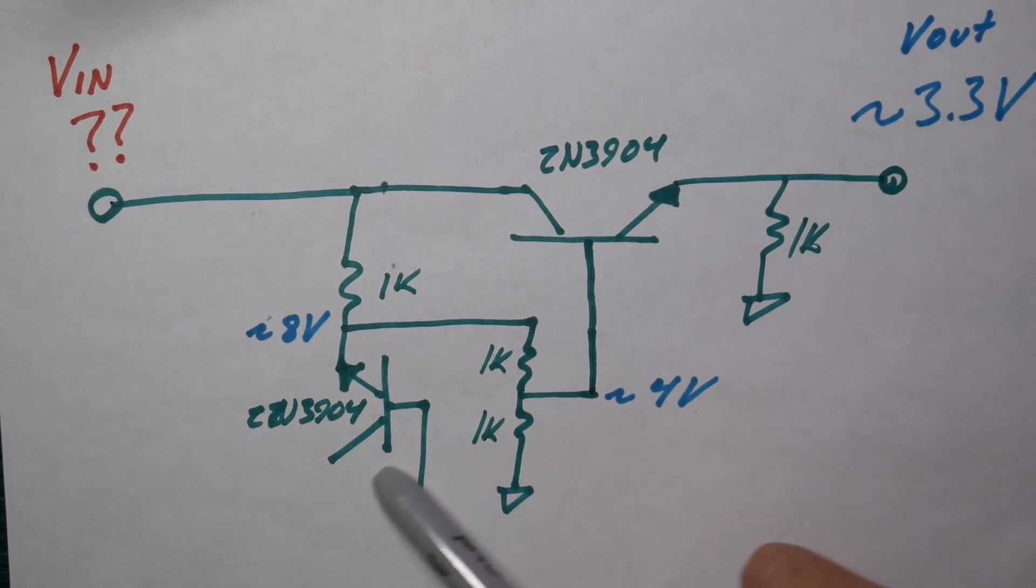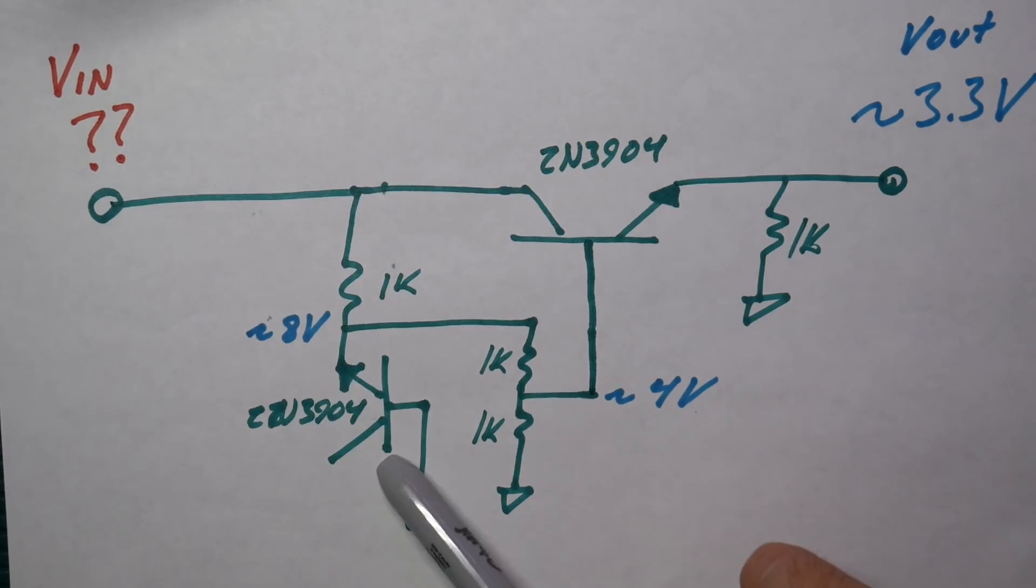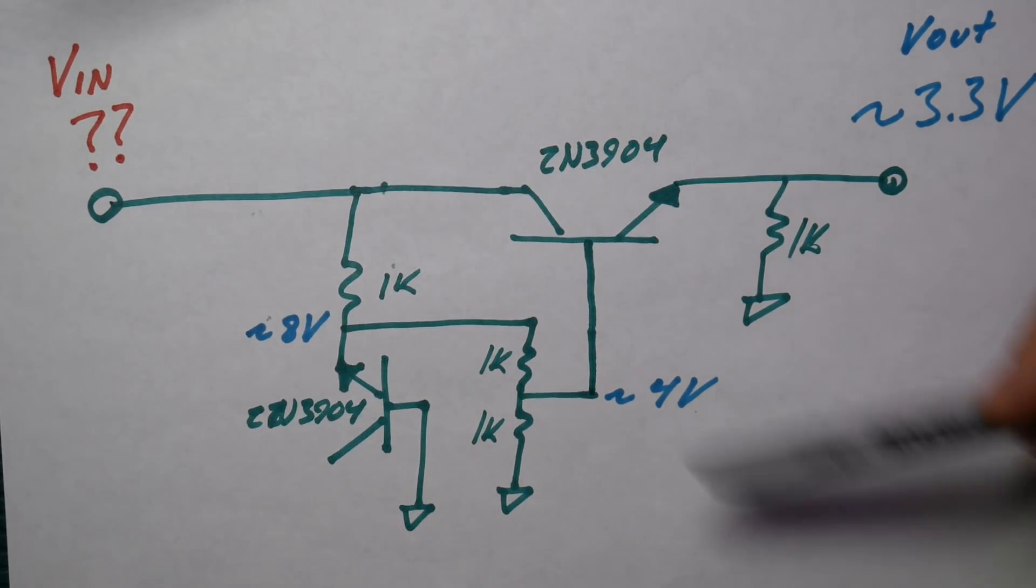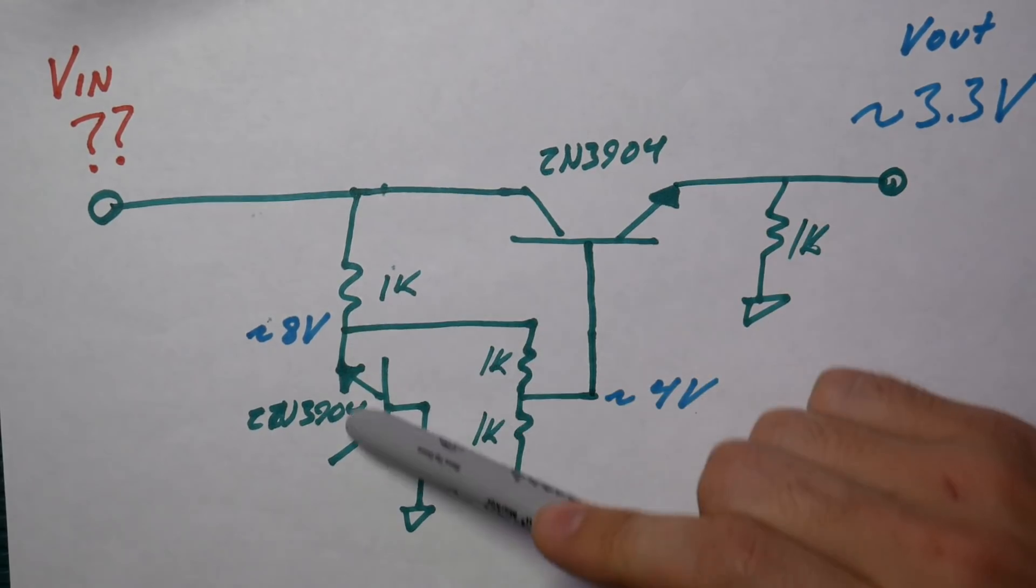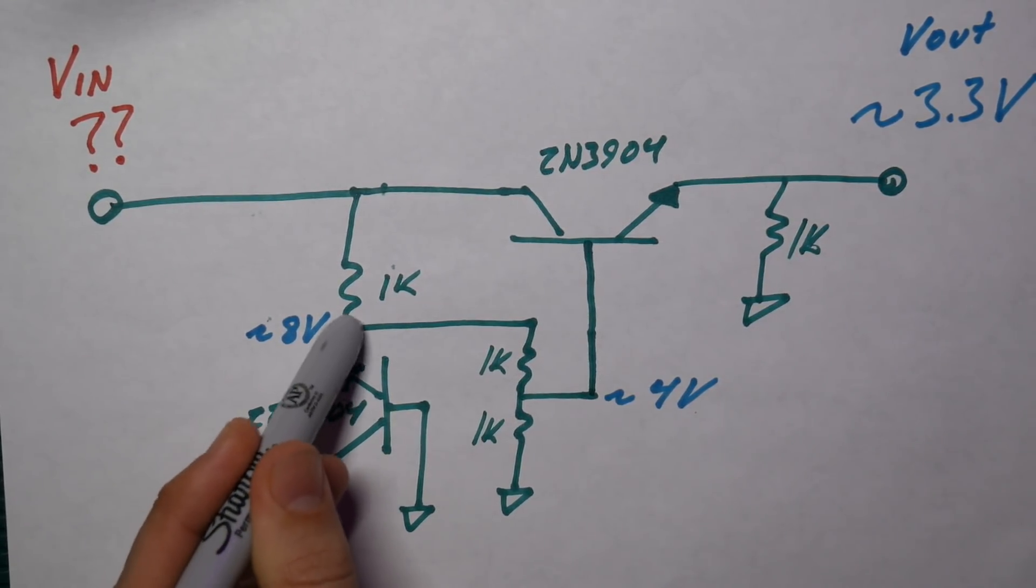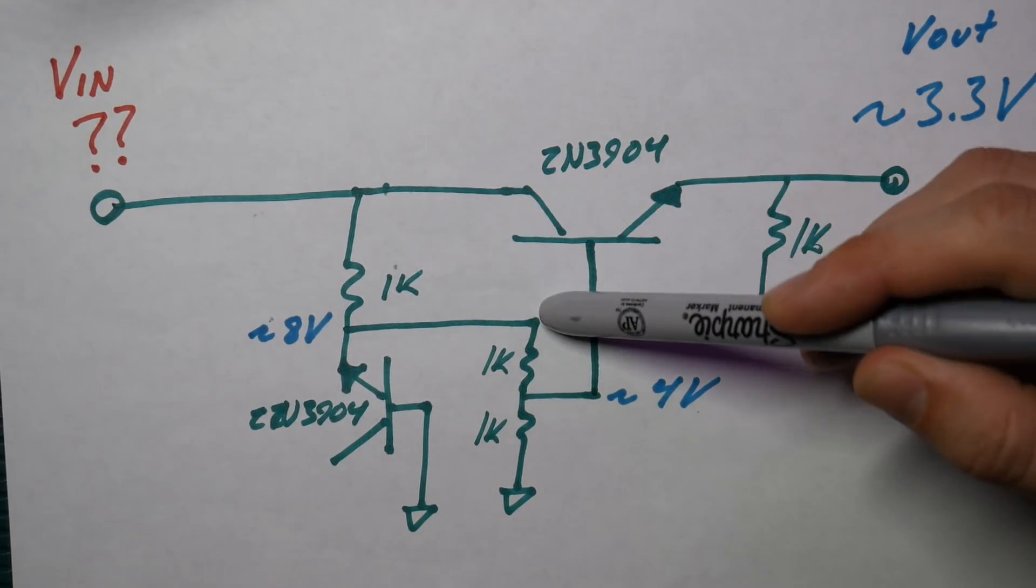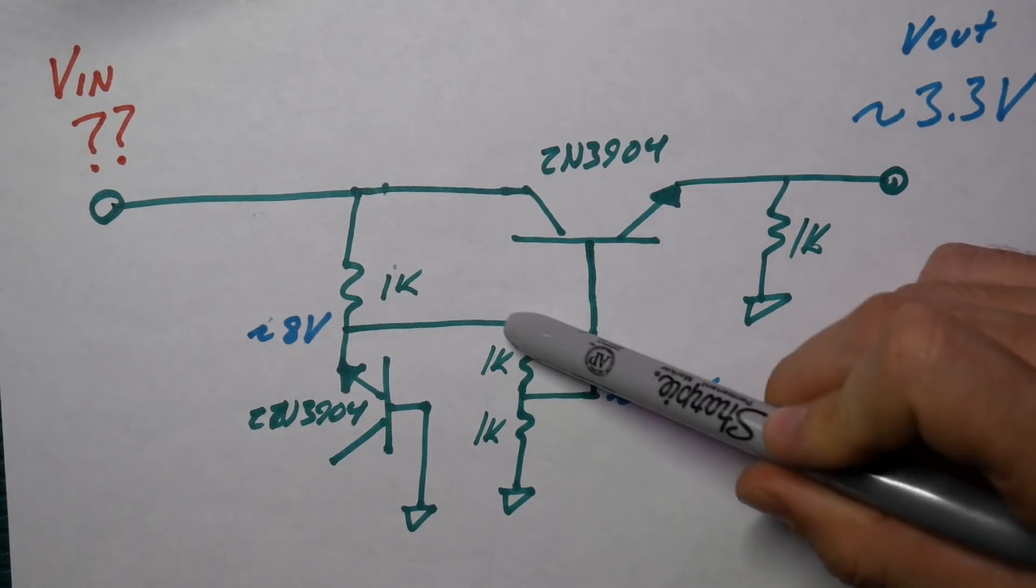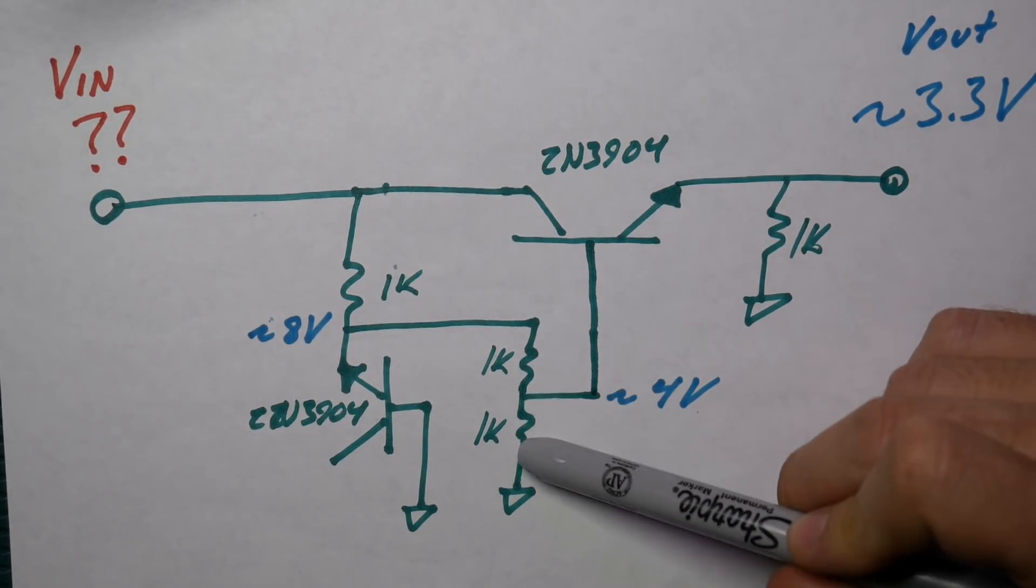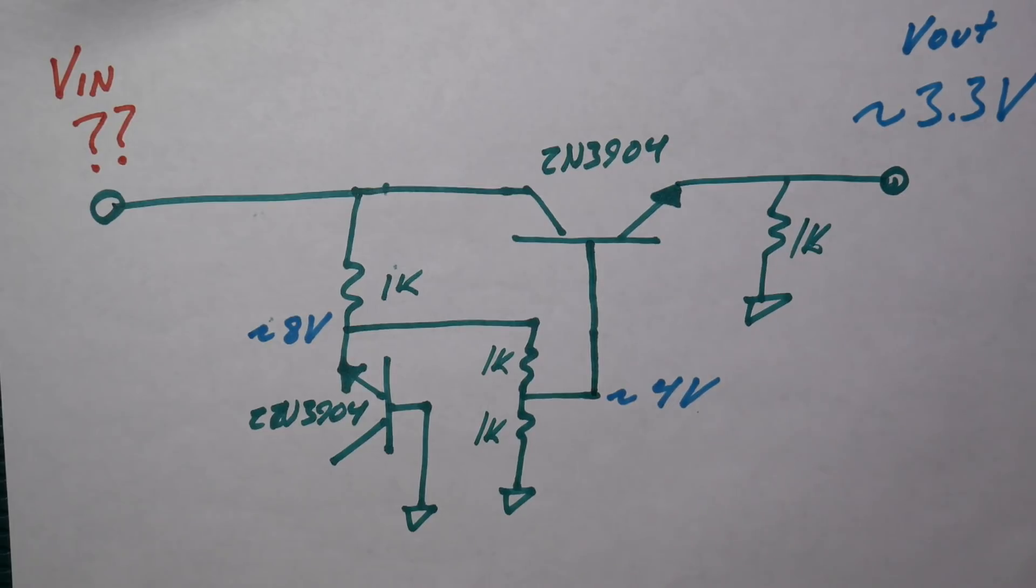So right here, you see that other NPN transistor set up as our Zener diode. So through a 1k ohm resistor, we set up the 8 volts right here, that breakdown voltage right here. That 8 volts is then divided in half to 4 volts right here using the 2 1k ohm resistors you see there.